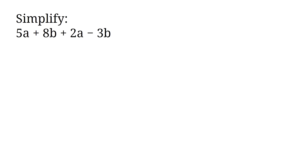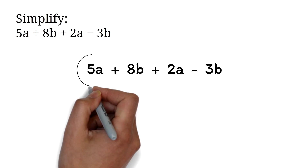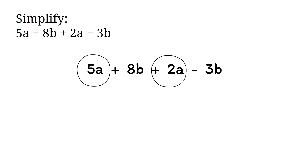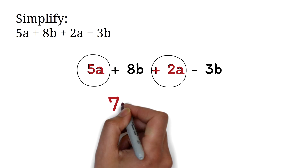Simplify 5a plus 8b plus 2a minus 3b. When simplifying expressions, you want to combine like terms. Like terms are terms that have the exact same variables raised to the exact same powers. Here, the 5a and 2a are like terms, so we can combine them. They both have 'a' after the number. We will add the numbers: 5 plus 2 is 7, then we bring the common letter after it, so we have 7a.